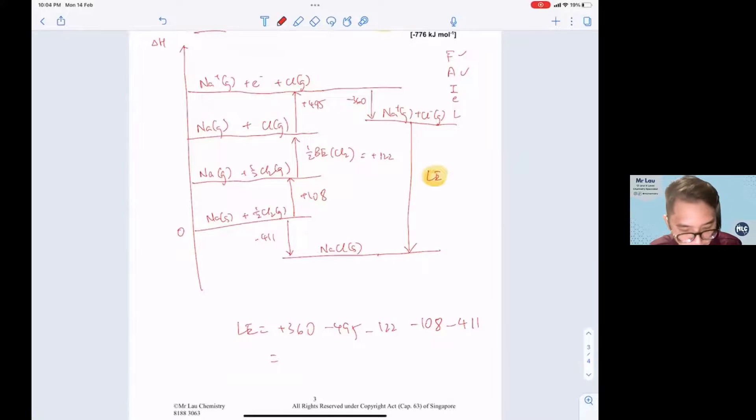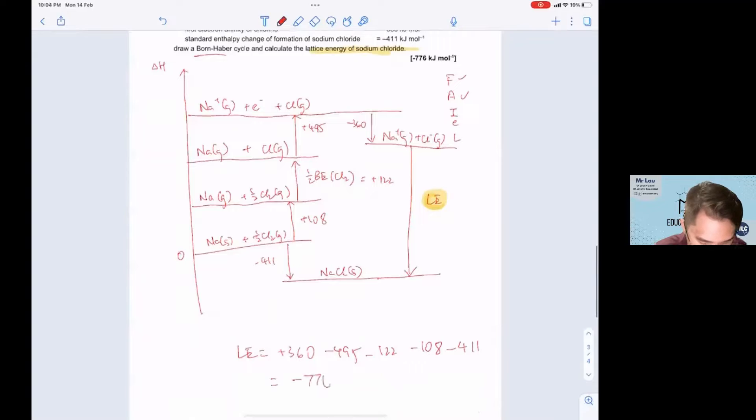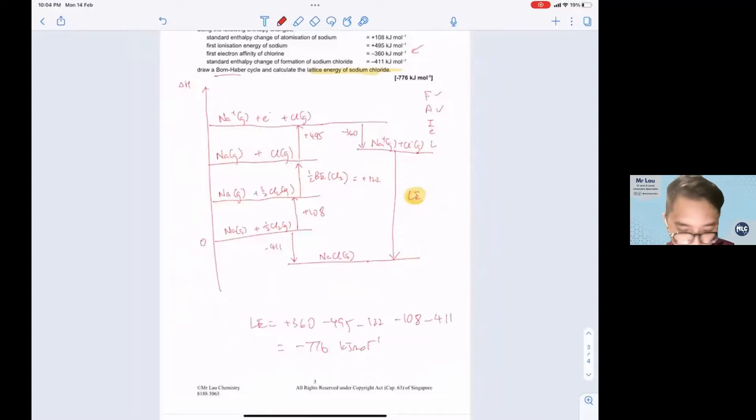If you sum up all this in your calculator, you'll get a value of minus 776 kilojoules per mole and this will be your lattice energy for sodium chloride.